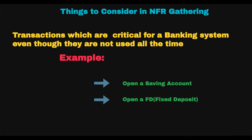An important point to consider is that transactions which are critical for business should be included even though they are not used all the time. Take the example of opening a savings account or a fixed deposit. These are considered for performance testing because revenue is made from deposits and new accounts. Even though the number is very low and it doesn't happen frequently, we still need to consider it for performance testing.